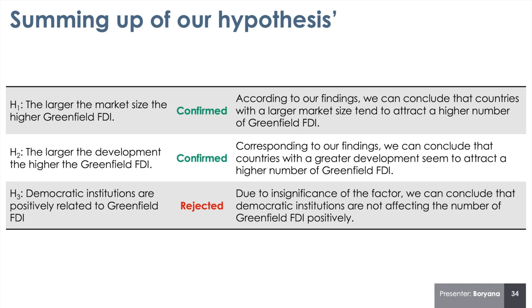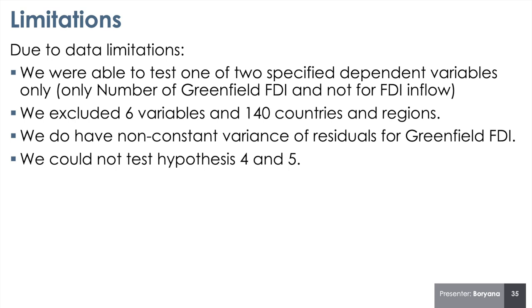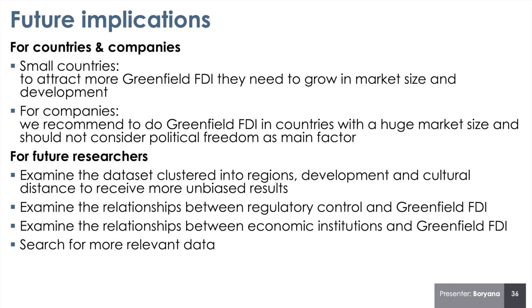Regarding hypothesis 3, we concluded that democratic institutions are not affecting the number of Greenfield FDI in a positive way, leading to the rejection of the hypothesis. We faced data limitations: due to missing data, we had to exclude six variables and 140 countries and regions, and were able to test our hypotheses only for Greenfield FDI. For future implications, our recommendation for companies is to pursue Greenfield FDI in countries with a large market size, higher development, or ideally both. For future researchers, it would be relevant to examine the dataset clustered into regions, development, and cultural distance, and to further examine the relationship between regulatory control and economic institutions with Greenfield FDI. Thank you for your attention.